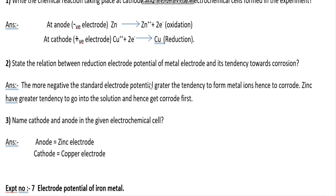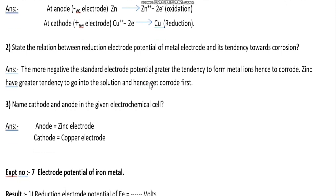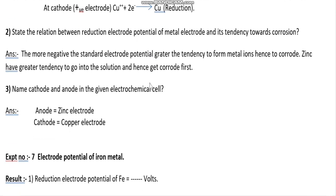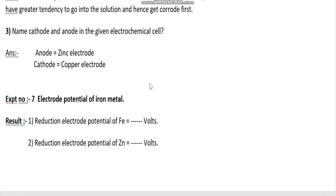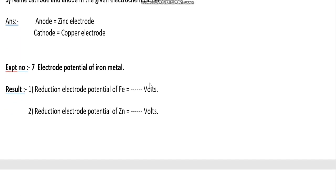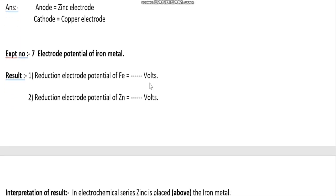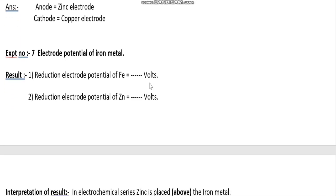Name the cathode and anode in the given electrochemical cell: in the given electrochemical cell, the zinc electrode acts as the anode, while the copper electrode acts as the cathode. Experiment number seven is electrode potential of iron metal.